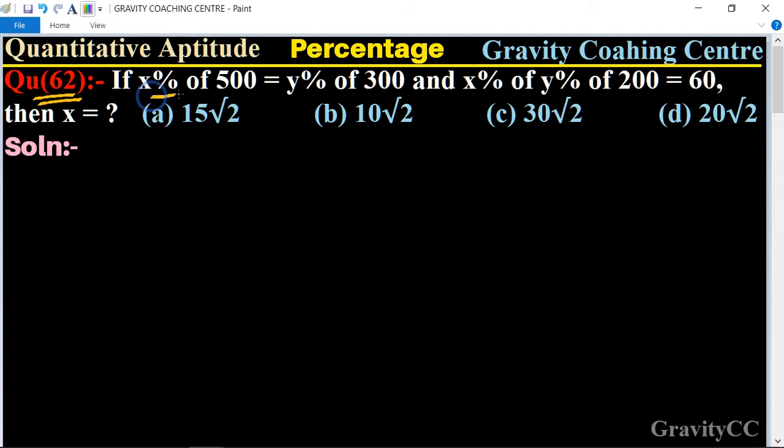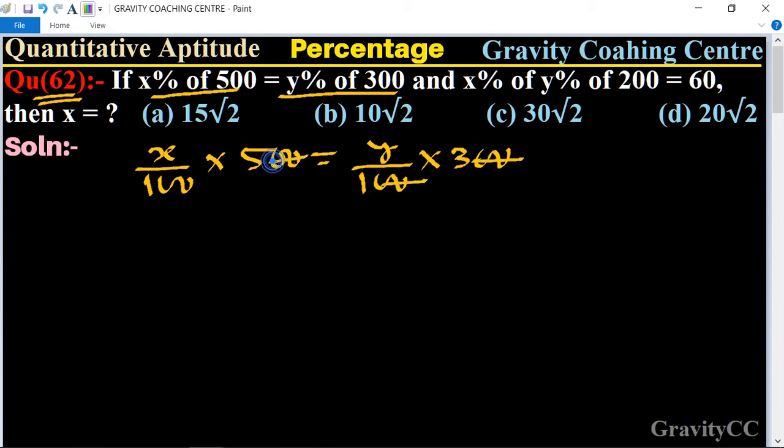Given that x% of 500 equals y% of 300, this means x/100 × 500 = y/100 × 300. Canceling the zeros, we get y = 5x/3.